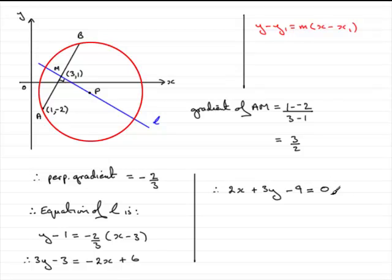So that would be the format ax plus by plus c equals 0, where a would be 2, b would be 3, and c would be minus 9. Okay, well that brings us to the end of the first part then of this question.